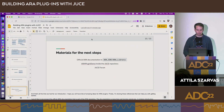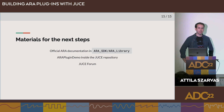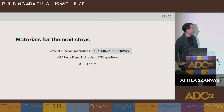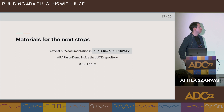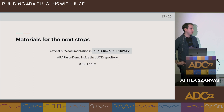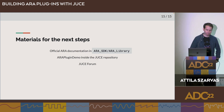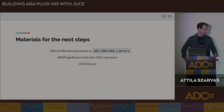That's all the time we had. I'd like to share a few references. I recommend the official ARA documentation — it's much more than just function signatures; it has introductory sections, diagrams, and explanations. Once you have a feel for the library, check out the ARA plugin demo inside the JUICE repository. And if you have questions during development, the JUICE forum has a lot of active developers helping each other.